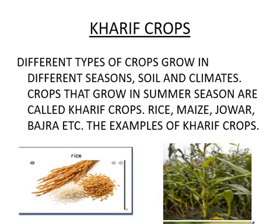Next are crops classified according to season. Different types of crops grow in different seasons depending on the soil and climate. Crops that grow in the summer season are called Kharif crops. Examples of Kharif crops are rice, maize, jowar, and bajra. In simple terms, crops that grow in summer season are called Kharif crops, and you have to learn their examples.